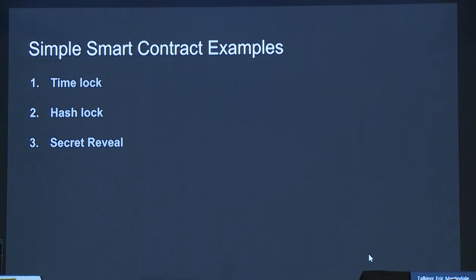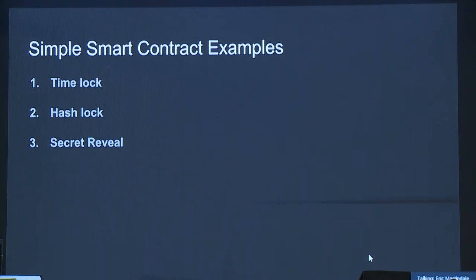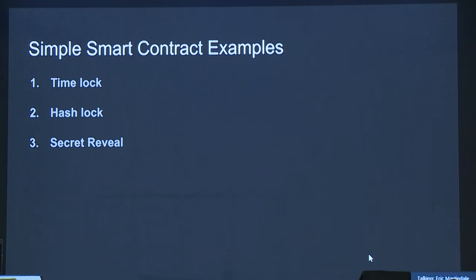You may have noticed that in the original transaction broadcast to the Bitcoin network, the public key is not revealed until spend time, and the signature doesn't exist at broadcast time. So the secret reveal tool is implicit — in order to spend a transaction locked up by a hash lock or any other smart contract, you do actually need to reveal that value to the rest of the network, at least if you use on-chain transactions. This is where Layer 2 systems and the Lightning Network become relevant.